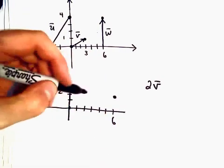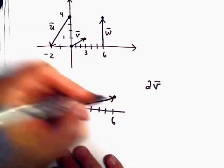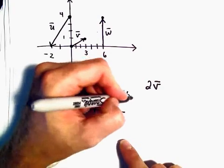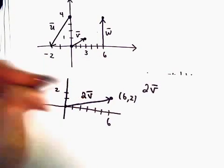So the vector 2V, we could simply write that as a vector that starts at the origin and goes out to the point 6, 2. Okay, so there's the vector 2V.